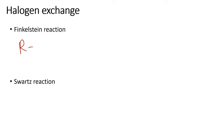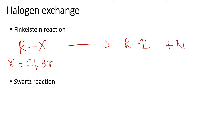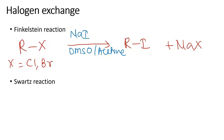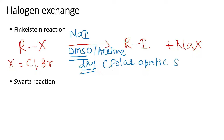In the Finkelstein reaction, this alkyl halide — where X could be chlorine or bromine — can get converted into a very specific alkyl iodide with the help of sodium iodide in a solvent like DMSO (dimethyl sulfoxide) or acetone. These are dry solvents — they should be dry in nature and belong to the category of polar aprotic solvents.